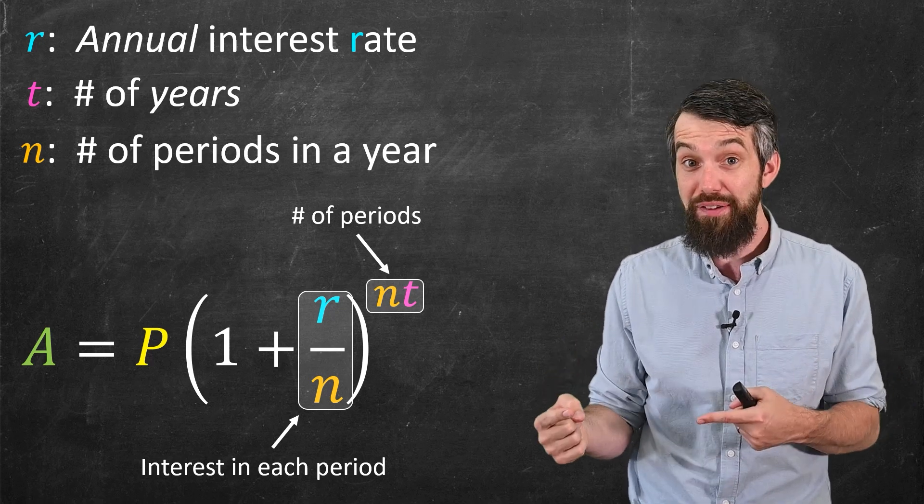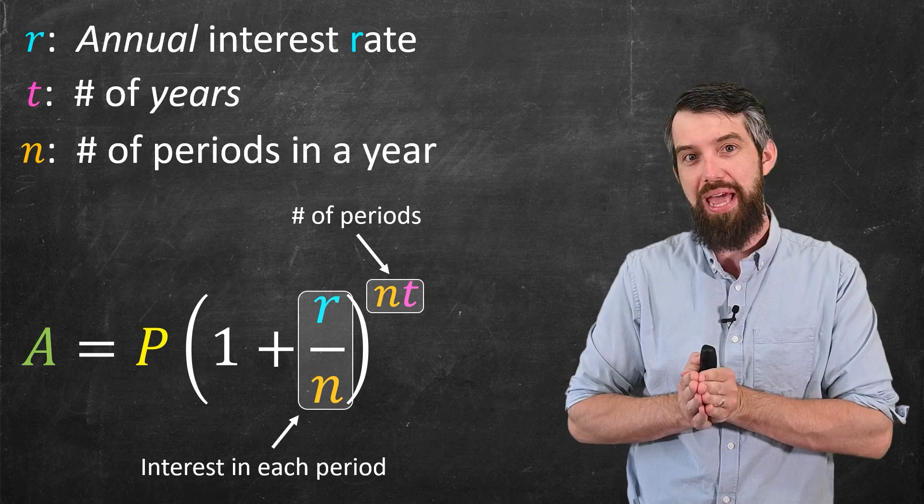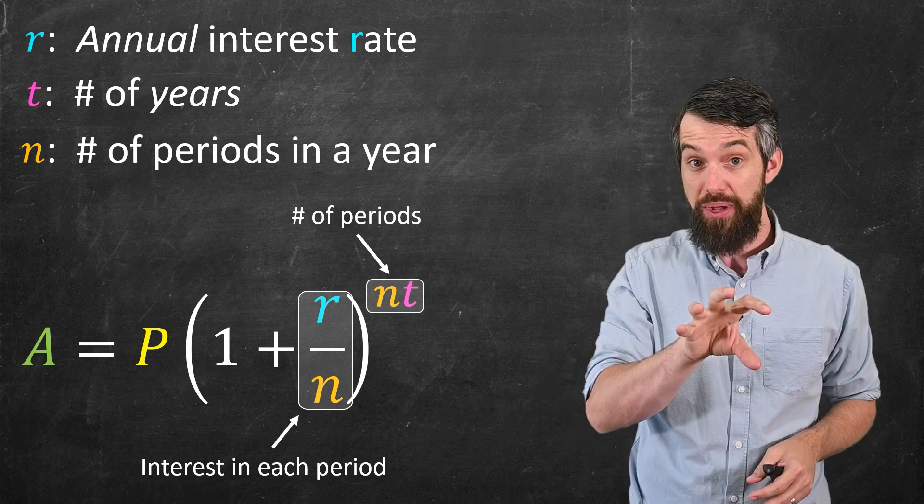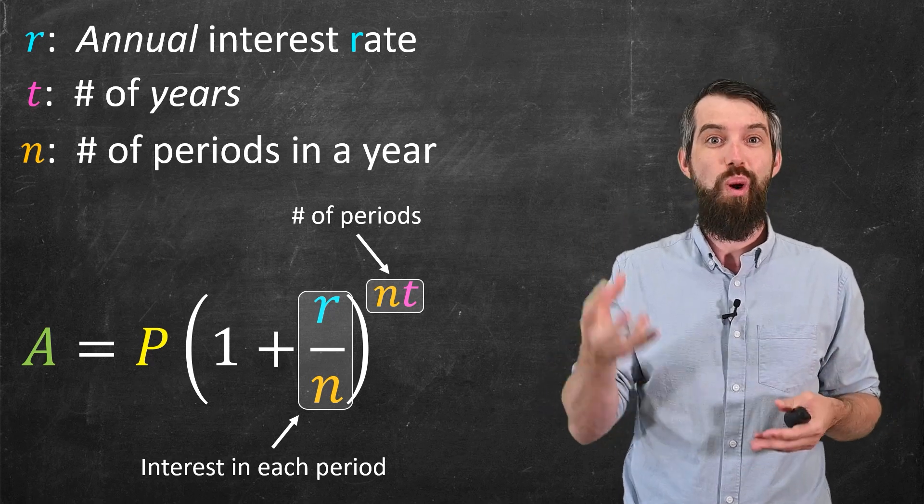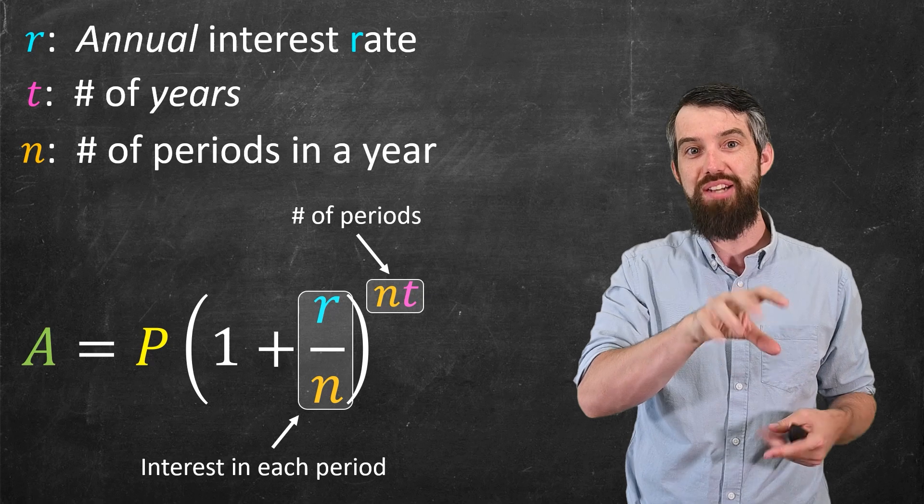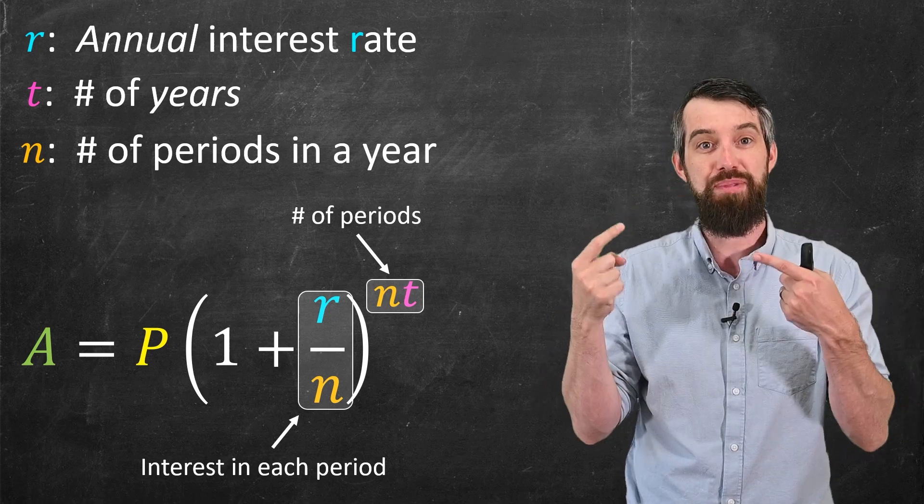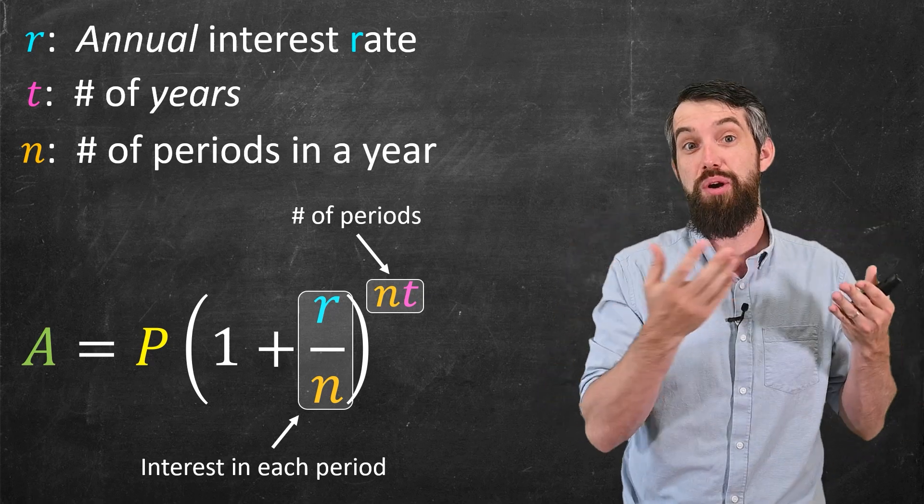I need to take this compounding factor, that 1 plus r divided by n, and I need to multiply it every single period. So for example, if there's n times t periods, you want it to be 1 plus r divided by n to the power of the n times t. So we've modified our previous formula.